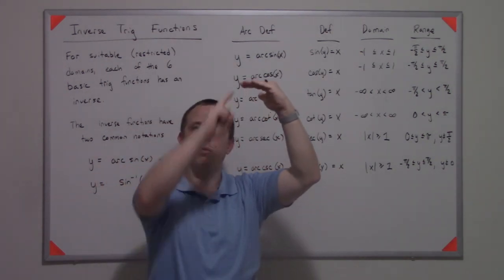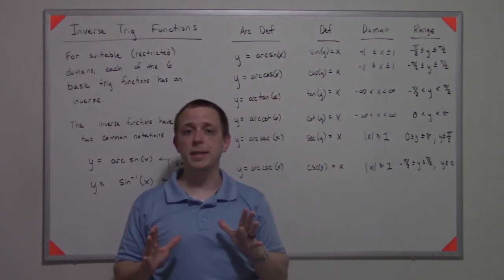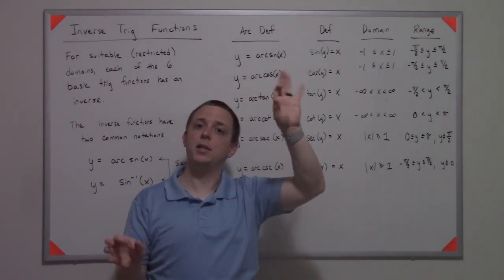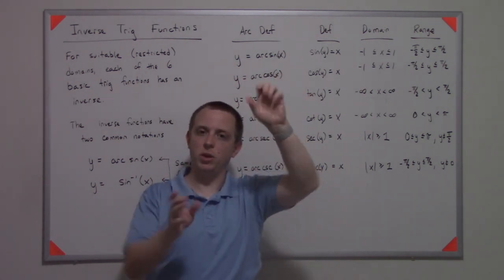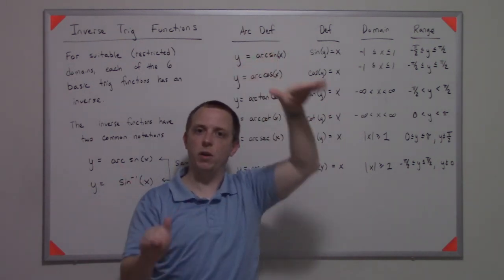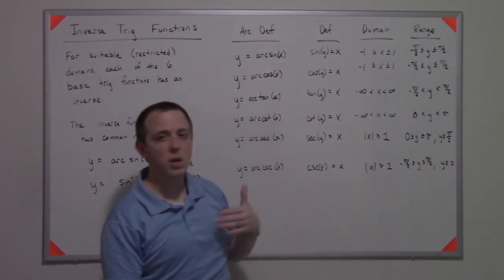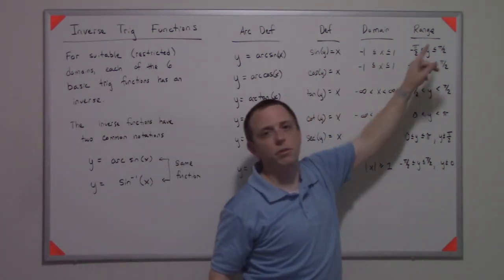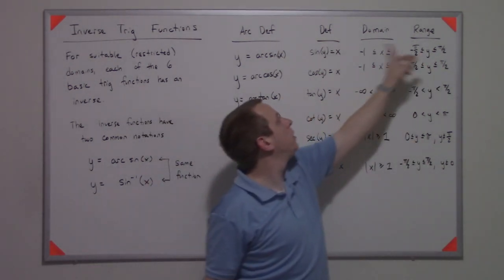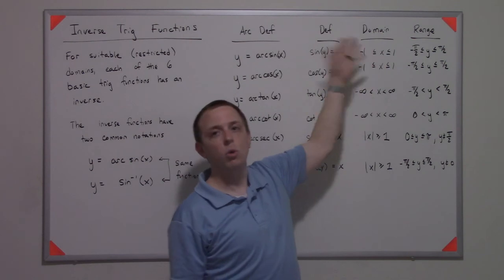But if you go any further than that, it stops being one-to-one because it would curve back up or curve back down and would fail the horizontal line test. That's the idea of the restriction - you restrict the domain for the sine function, which in effect generates a restricted range for the arcsine function.